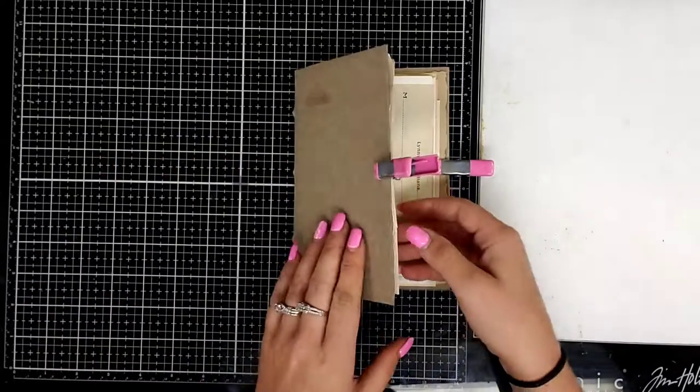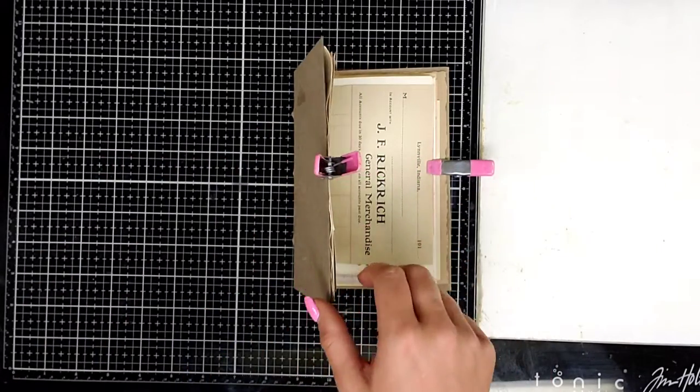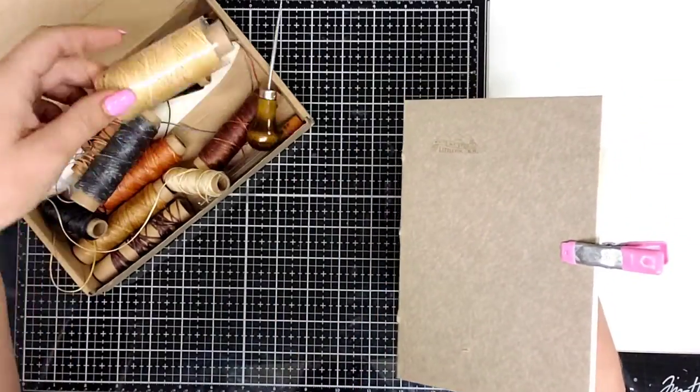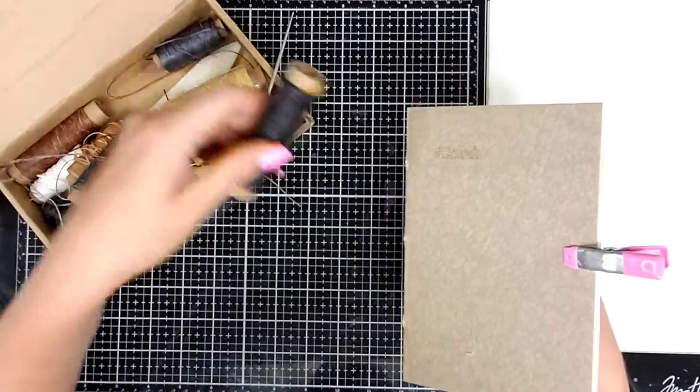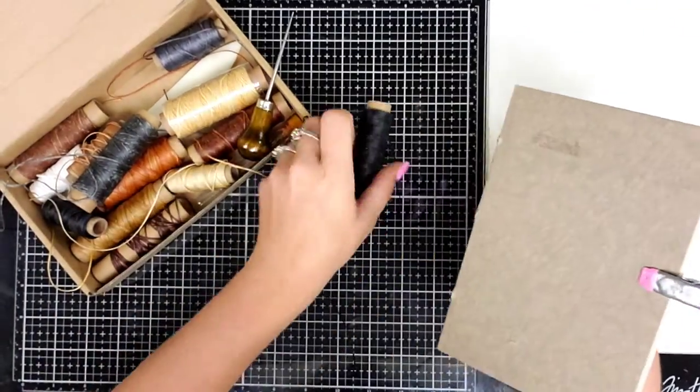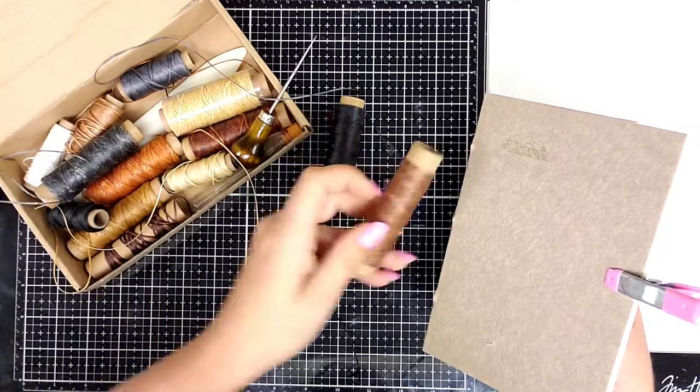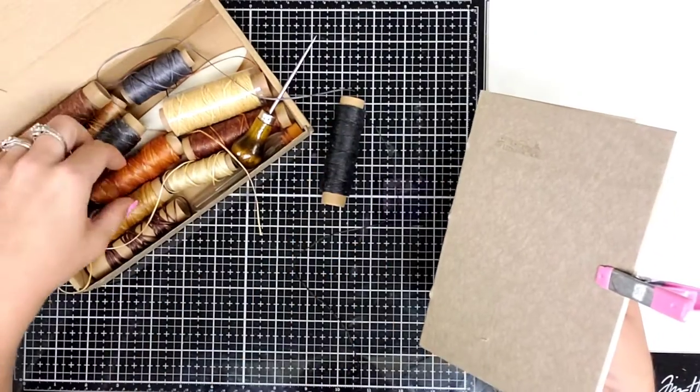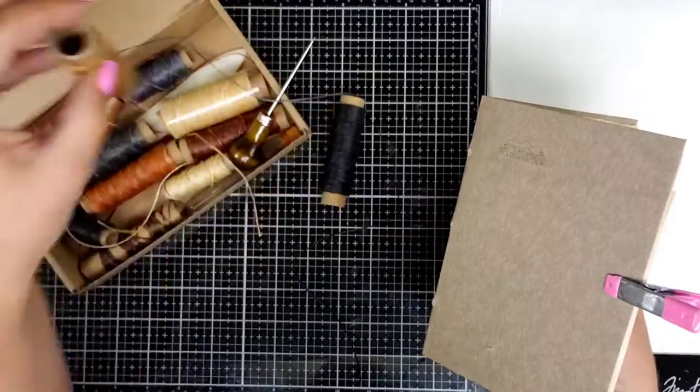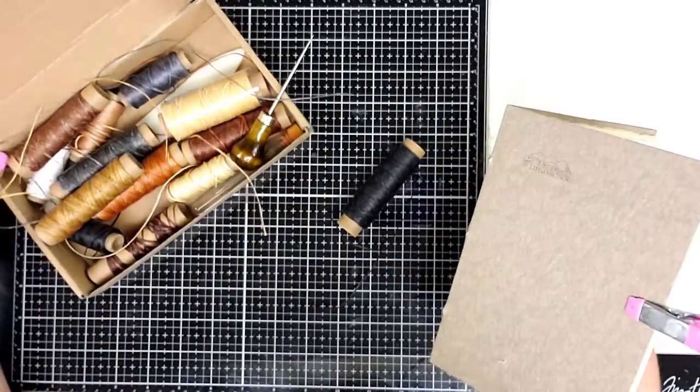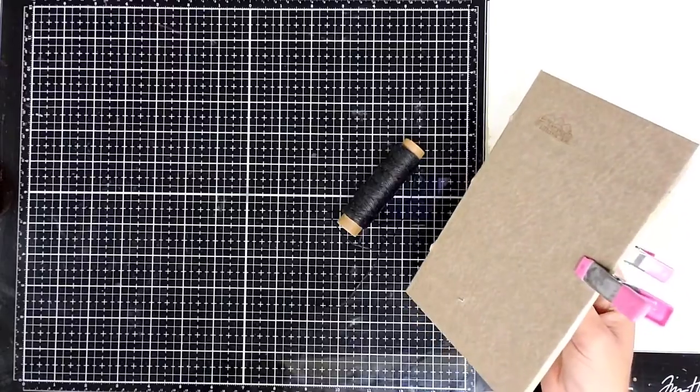Get that out of the way. Next, we're going to have to pick out our wax thread that we want to use. I should have already done that, to be honest with you. I think I might just use black. I've got some browns. I think, I think I like just the black. I think that's what I'm going to go with. And you're going to need a sewing needle.